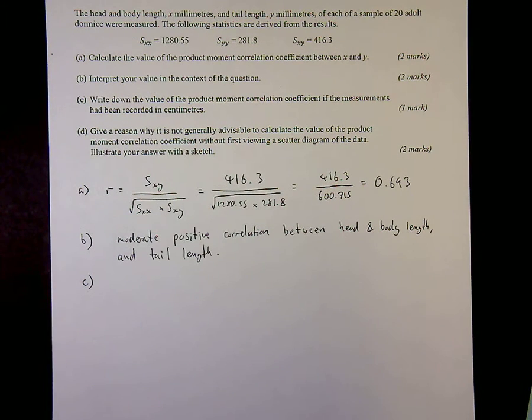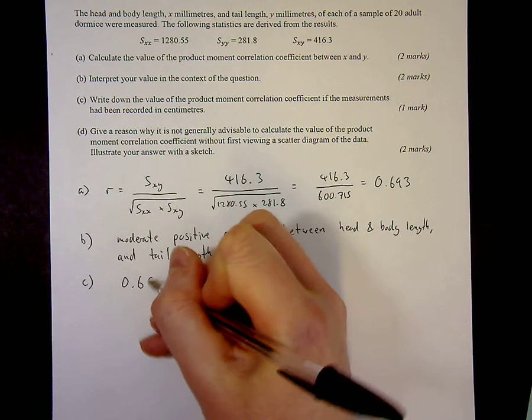Part C says write down the value of the PMCC if it would be recorded in centimeters. Once you think about the scatter graph and what it would look like in millimeters compared to what it would look like in centimeters, it would look exactly the same, just scaled up. So the product moment correlation, the strength of the correlation won't change at all. So it will still be 0.693.